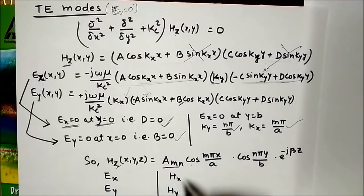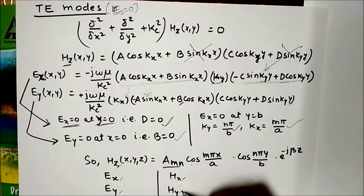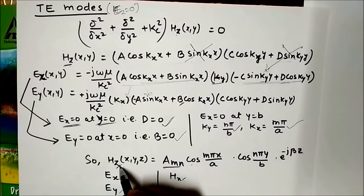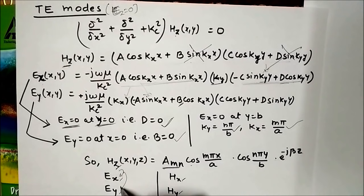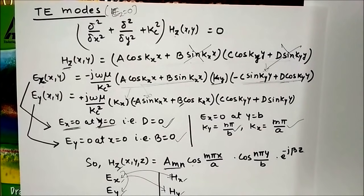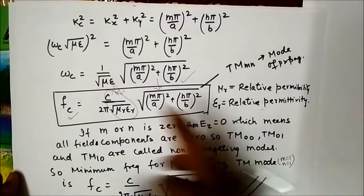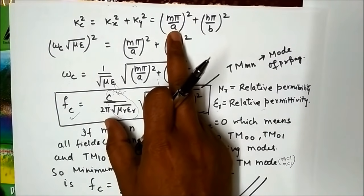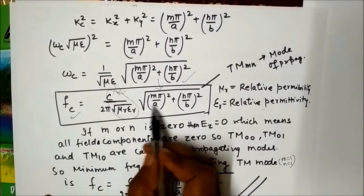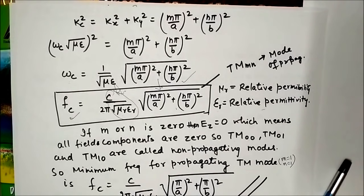Now that we know Hz, we can calculate Ex, Ey, Hx, Hy since this is the longitudinal field and any transverse field can be derived from it. The cutoff frequency formula for TE mode is the same as TM mode since Kx and Ky values are identical.